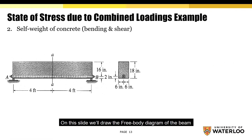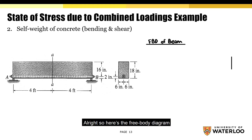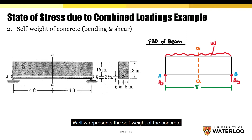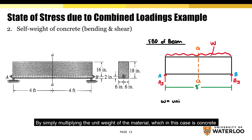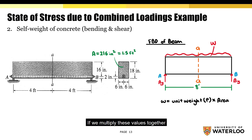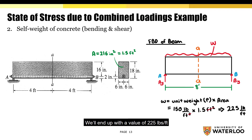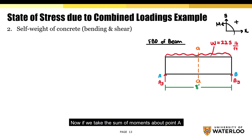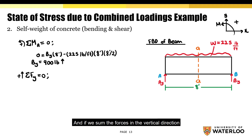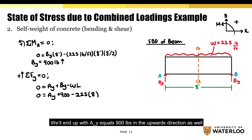On this slide we'll draw the free body diagram of the beam accounting for the self-weight of the concrete and then solve for the support reactions. Since we're only considering the self-weight, we won't have to worry about the tendon. W represents the self-weight of the concrete, obtained by multiplying the unit weight — 150 pounds per cubic foot — by the cross-sectional area of 1.5 square feet, giving 225 pounds per foot. Taking moments about point A gives BY equals 900 pounds upward, and summing vertical forces gives AY equals 900 pounds upward.